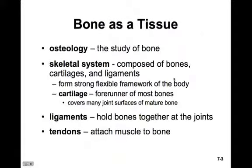The skeletal system is composed of bones, cartilages, and ligaments that are joined tightly and form a strong, flexible framework for the whole body. Osteology is the study of bone. Cartilage is the forerunner to most bones and covers many joint surfaces of a mature bone. Ligaments are connective tissue that hold bones together at the joints — bone-to-bone connections. Tendons attach muscles to bone.